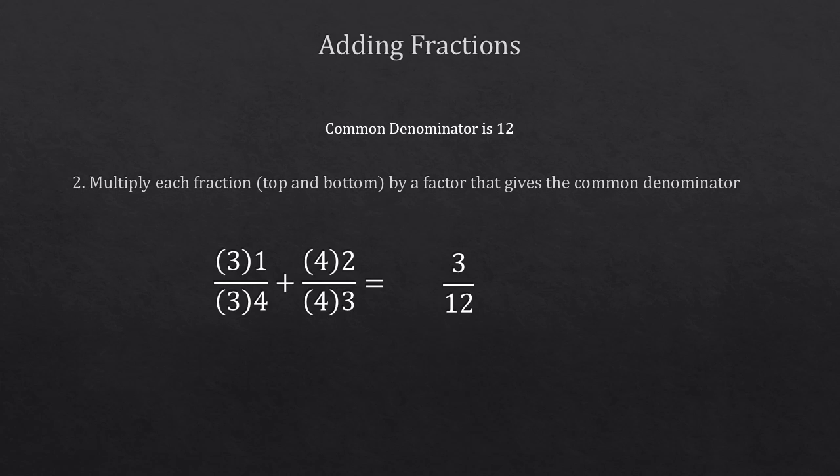To get 12 on the bottom of the next fraction, we need to multiply 3 by 4. And so, we'll need to multiply 4 by the numerator as well. And that gives us 8 over 12.